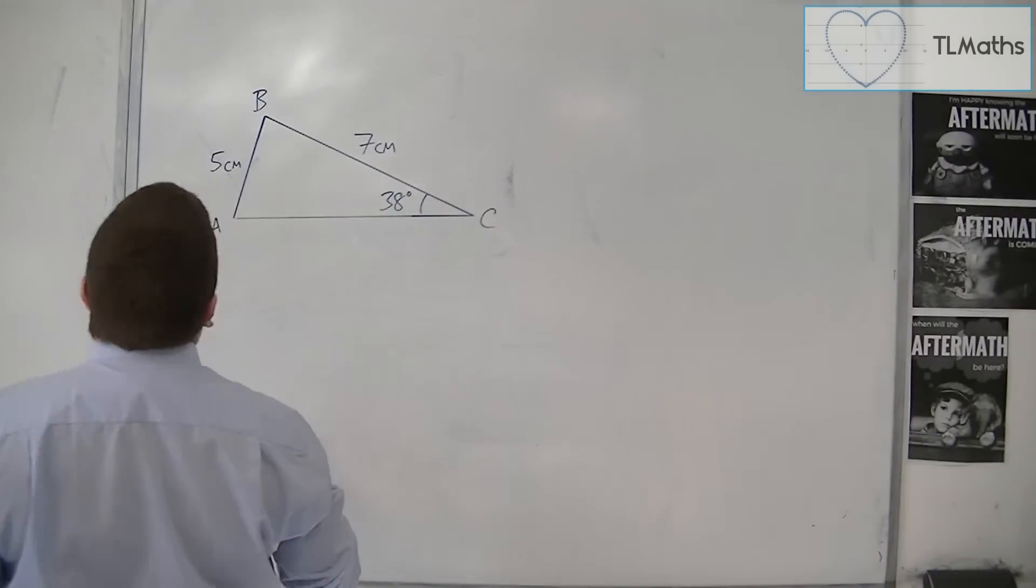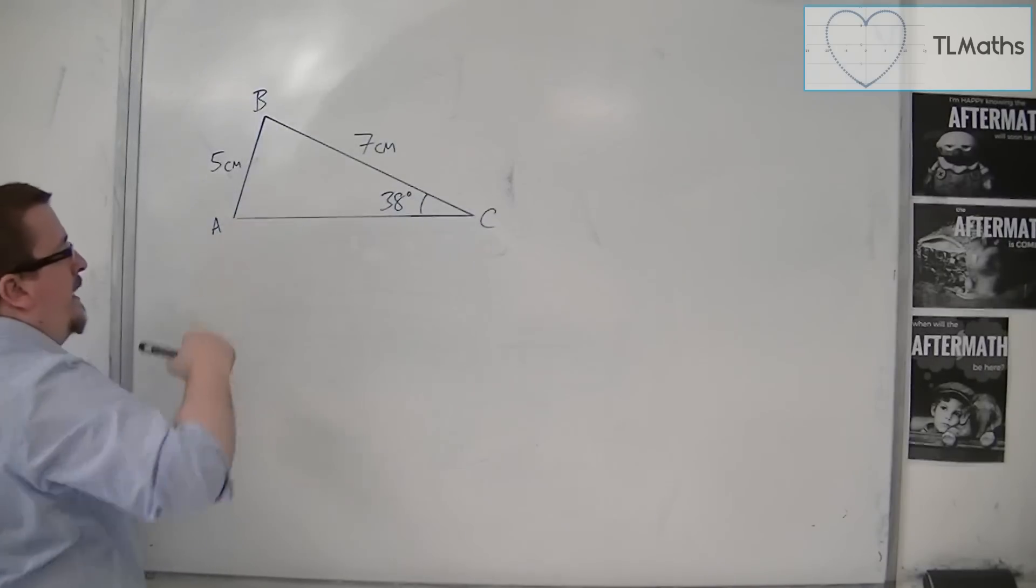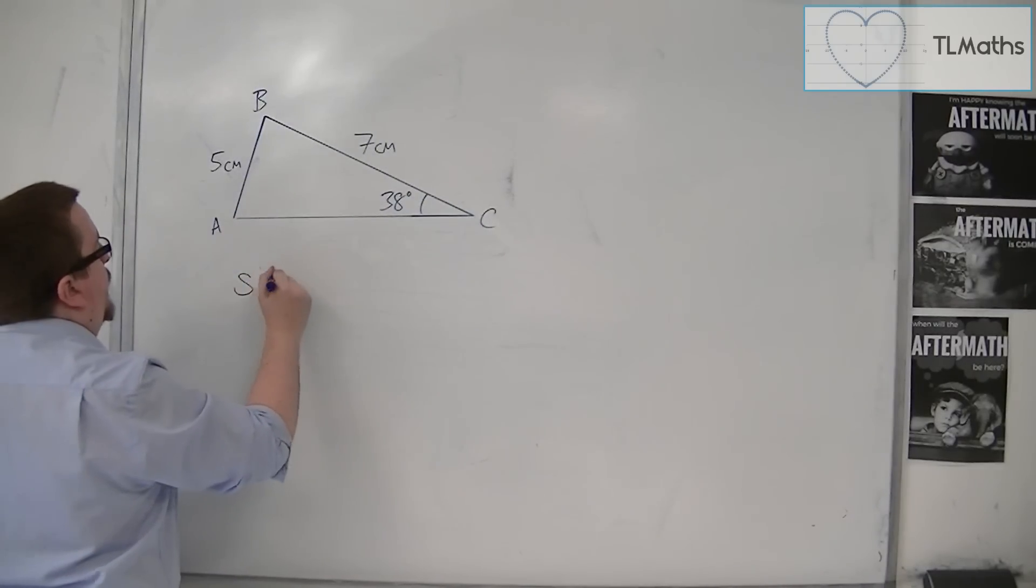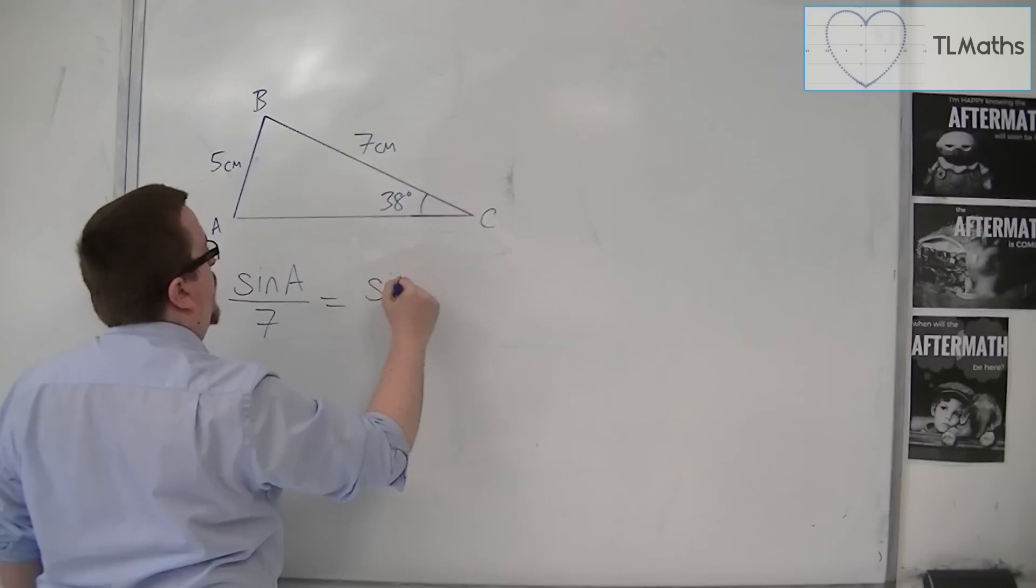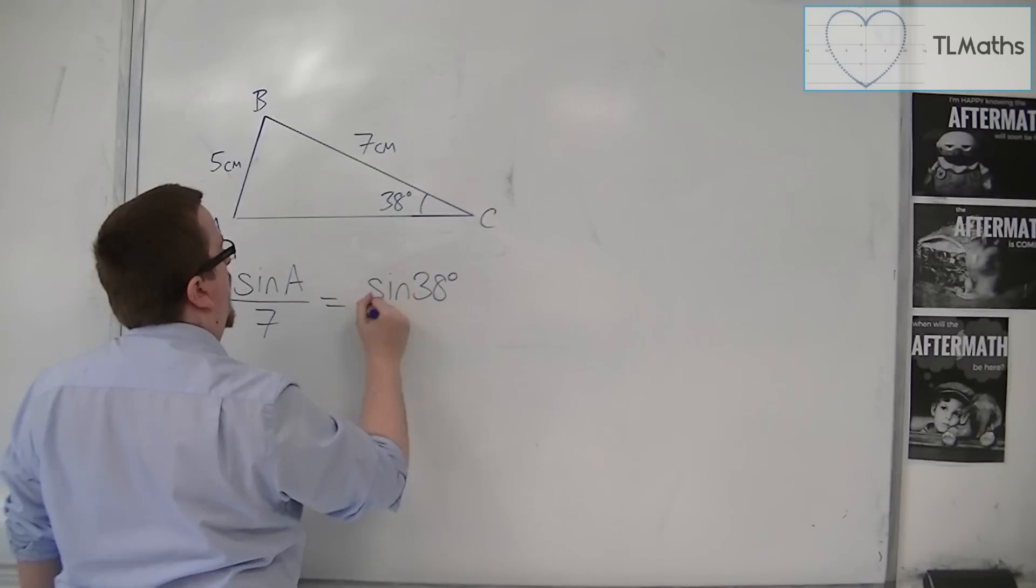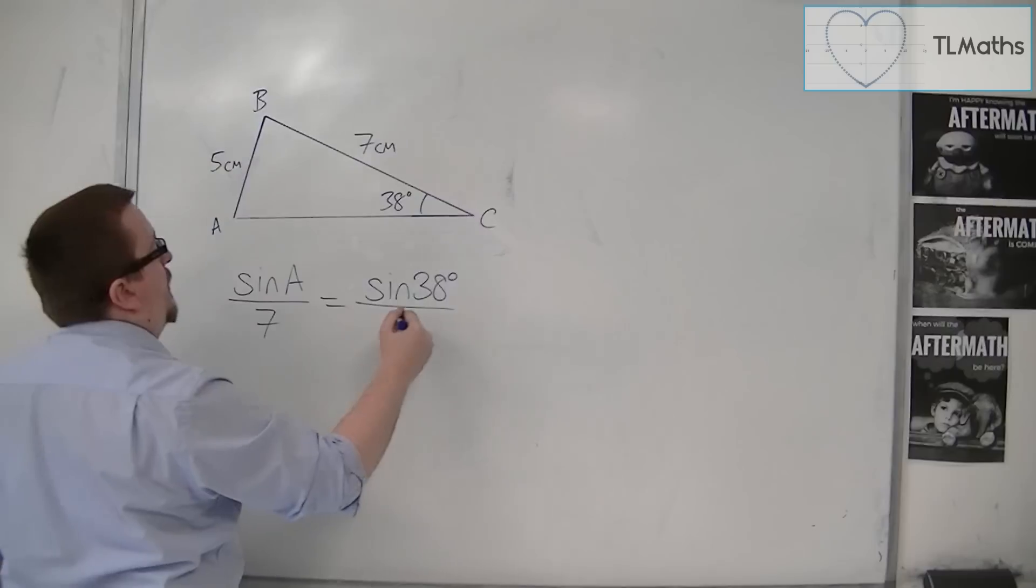So if I wanted to work out A, the angle of A, then I would use the sine rule. So I'd have sine of A over little a, so 7, is equal to sine of C, so sine of 38, over its opposite side, 5.